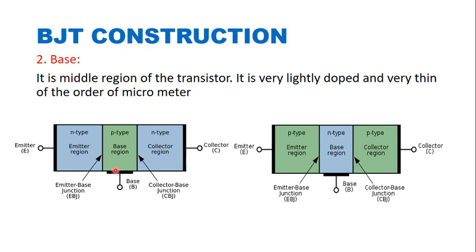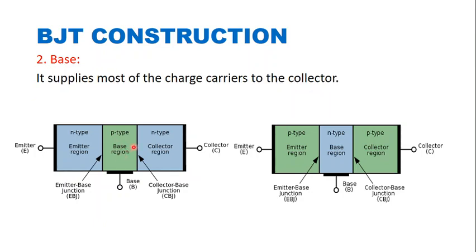The next region is the base region. As you can see in the diagram, the base region is between the emitter region and collector region. It is very lightly doped and very thin, on the order of micrometers — thinner than both the emitter and collector regions. It is lightly doped so that whenever charge carriers come from the emitter region, only a small amount can recombine here, and the rest are collected by the collector.